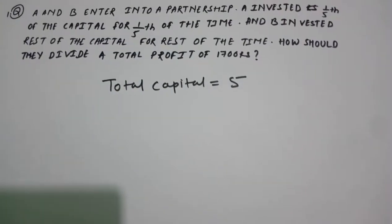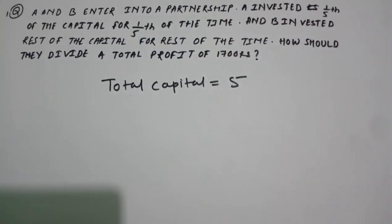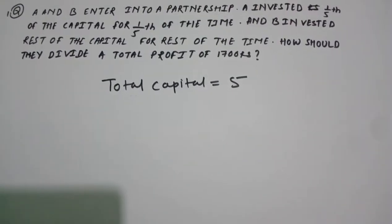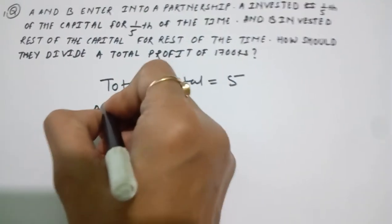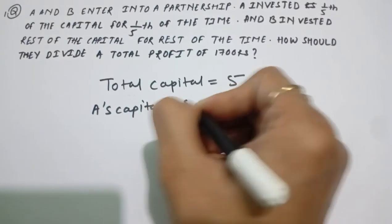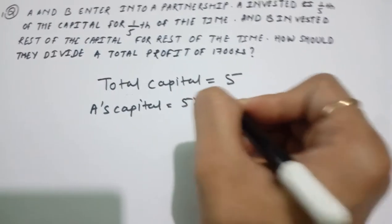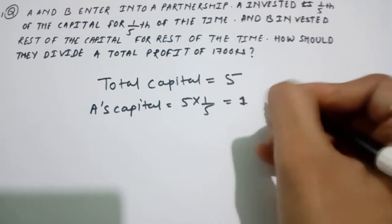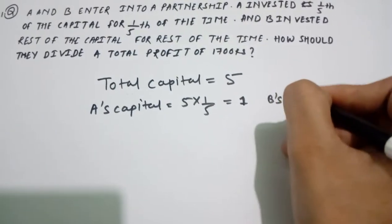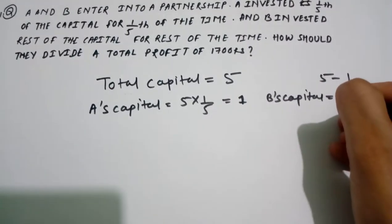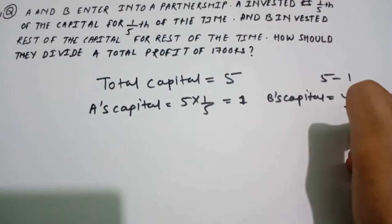Here I will take the total capital as 5. So A's capital will be 5 into 1/5, which equals 1. According to the question, A invested 1/5th of the capital, so A's capital is 1. B's capital is the rest of the capital, which equals 5 minus 1, equals 4. This is B's capital.